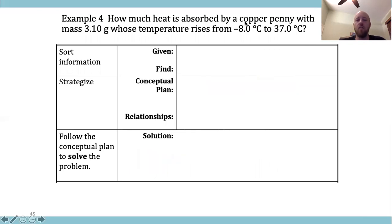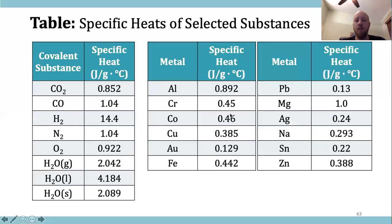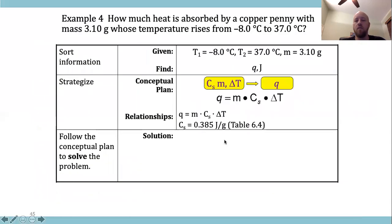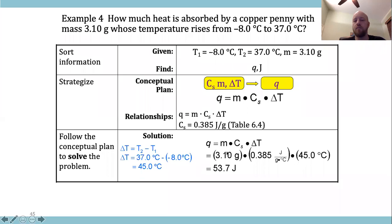The specific heat for copper comes from a table in your book. Using Q = mcΔT: mass times heat capacity times delta T, the result comes out in joules because the heat capacity is in joules per gram per degree Celsius.